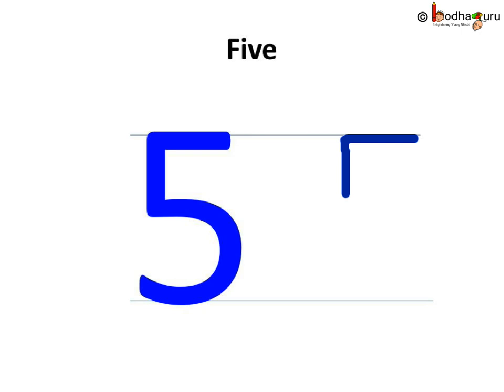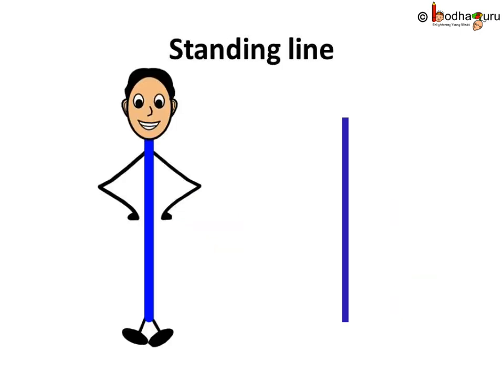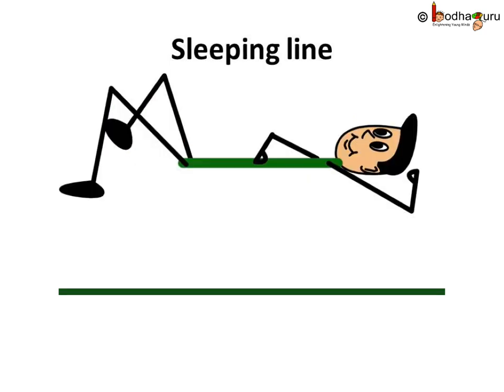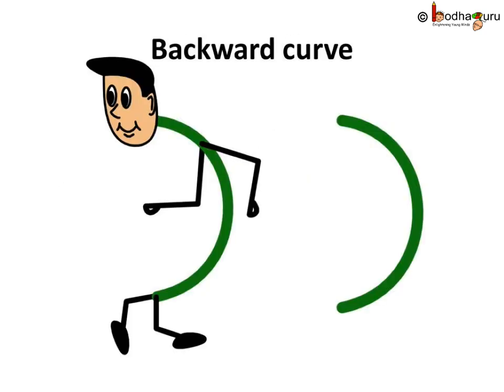How do we write 5? Let us write 5. Remember, standing line and sleeping line and the backward curve. The curve facing back. Let us use all of them.